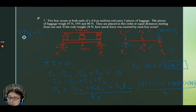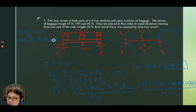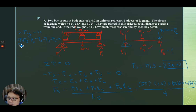If we do sum of forces along Y equal to zero, we get positive F1 plus positive F5 — those are the upward forces — minus F2, minus F3, minus F4, and F6 is also downward, equal to zero. We do not know F1, so we leave it on one side. F1 equals F2 plus F3 plus F4 plus F6 minus F5.